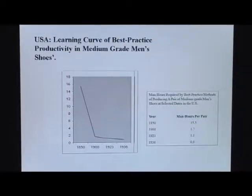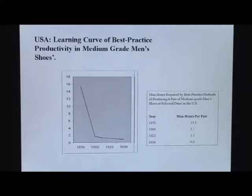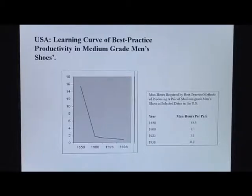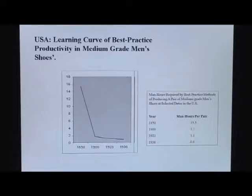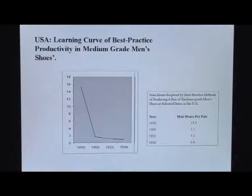Drawing the learning curve in a different way, we can see the same type of productivity increase in the example of the learning curve for shoes in the United States. In 1850, it took 15 and a half hours to make a standardized pair of shoes. In 1900, it was down to 1.7 hours; in 1923, 1.1; and in 1936, 1.9.